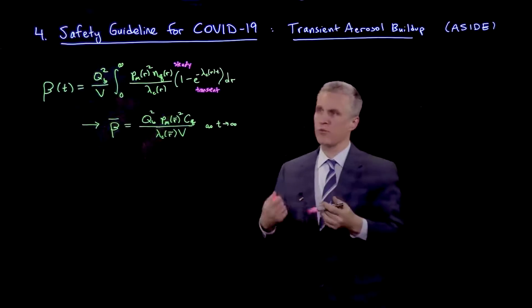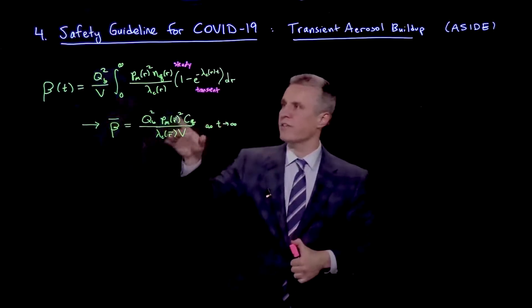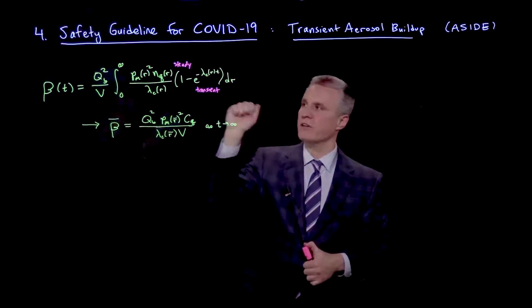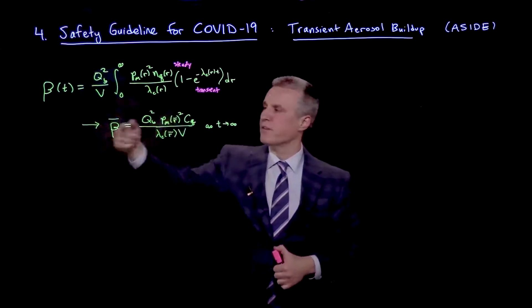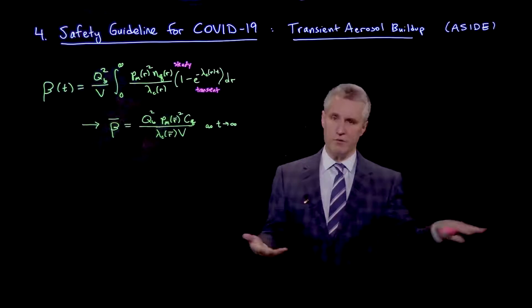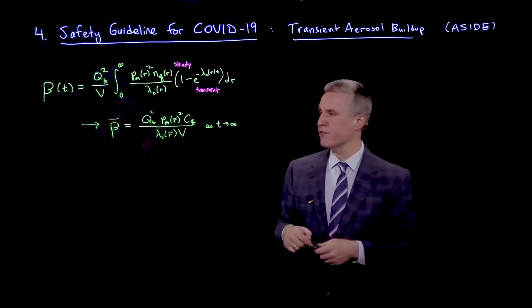So we're interested now, what's the effect of the transient? Now, before we get to that, if we forget about the transient and we just have the steady state, then we have introduced beta bar as the sort of constant steady state value transmission.